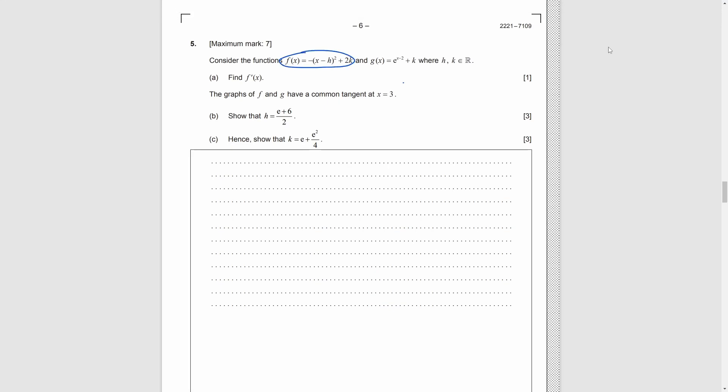Question 5. Function F is this, and for part A, we need to find f dot x. So, we just differentiate. For the first term, we need to use power rule, put the index number in front, and subtract it by 1. So, we get negative 2 bracket x minus h.